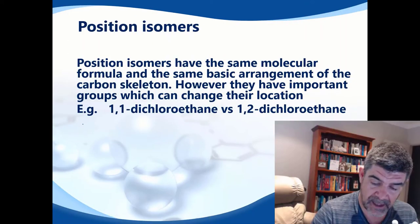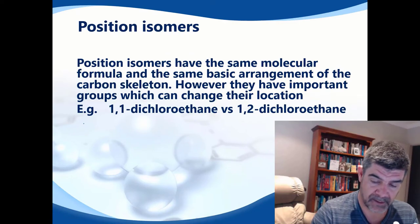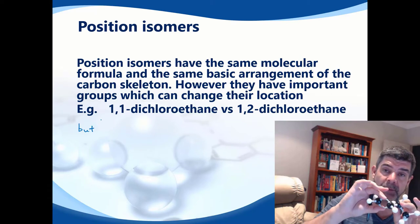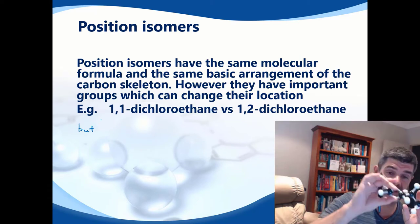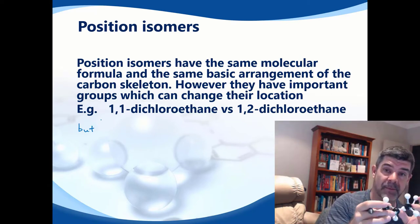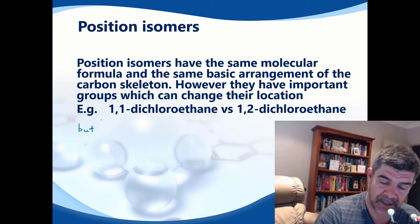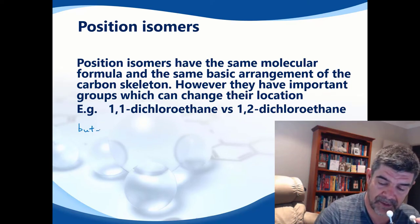So if I was to look at butene, one of the things about butene is the double bond could be in more than one position, and that's what I'm after in order to look at position isomerism. So I need to make sure that my number indicates the position of the double bond.